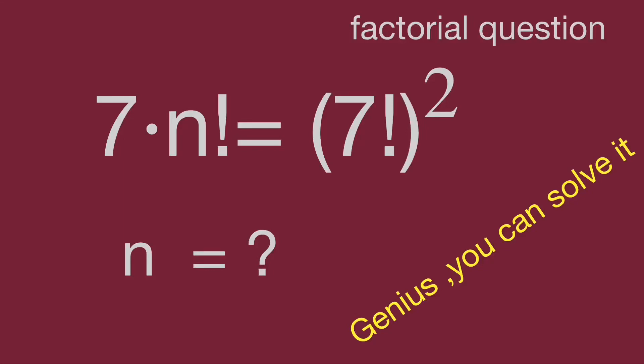Hello, you are watching Bala Hippo math genius readers. We have a nice factorial question: 7 times n factorial equals the quantity 7 factorial squared. Find the value of n. Please pause the video and give yourself a try if you are interested. When you are ready, keep watching the video to find the result.